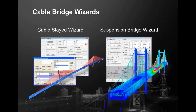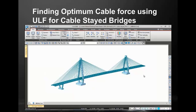We also have cable-stay and suspension bridge wizards to create models and find the optimal cable force using the Unknown Load Factor (ULF) method, since cables have different forces at different construction stages with different jacking forces — all easily calculated from the ULF feature. We additionally have a grillage model wizard, customized for Caltrans, suitable for grillage models or voided deck slab bridges.